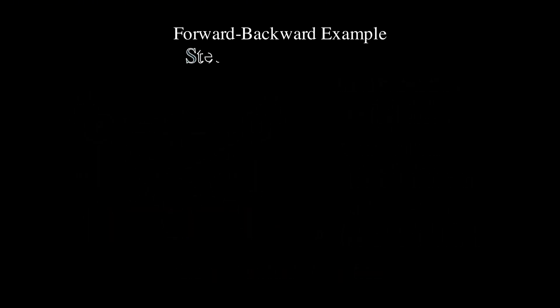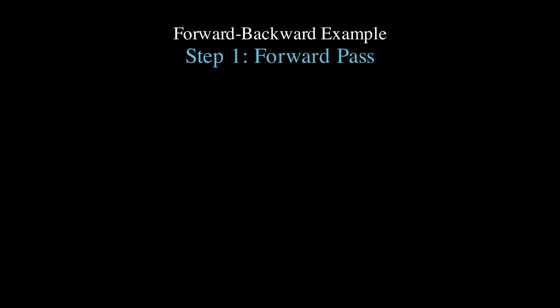For the forward pass on day 1, we compute alpha 1 of sad as p sad times b sad of red, which is 0.6 times 0.1 equals 0.06, and alpha 1 of happy as 0.4 times 0.8 equals 0.32.